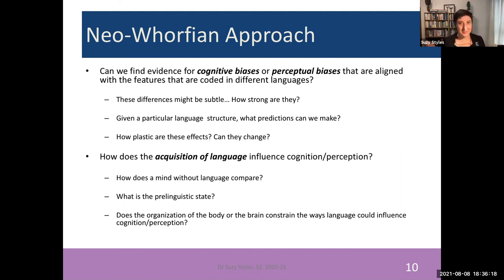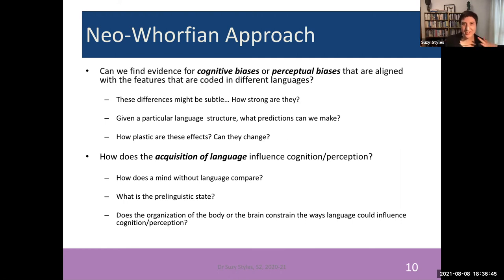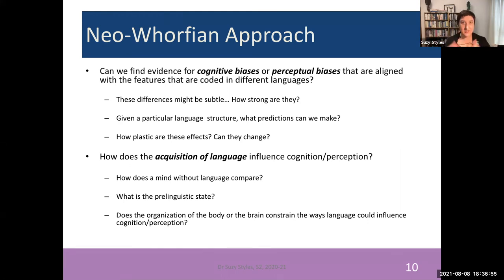The Neo-Whorfian approach takes its starting point from the linguistic structures of the particular languages it investigates — so it's linguistically guided. Given a particular linguistic structure, what predictions can we make about cognition, perception, thinking, or action? The Neo-Whorfian approach can also ask how plastic are these effects. Can we push them around? Can we change ourselves from one moment to the next simply by changing our linguistic experience, our linguistic expectations, or our linguistic context?